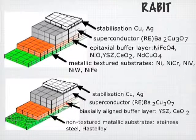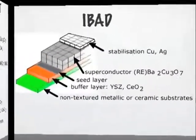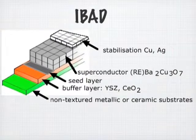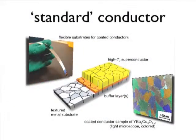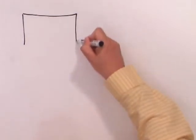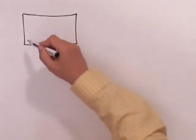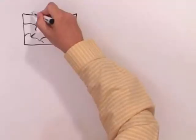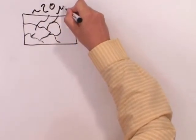These points of current percolation in coated conductors hold both for the RABITs-based coated conductors and the IBED-based coated conductors. To make it a little bit more clear, let's sketch the surface of a coated conductor.